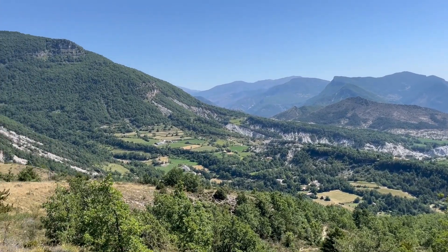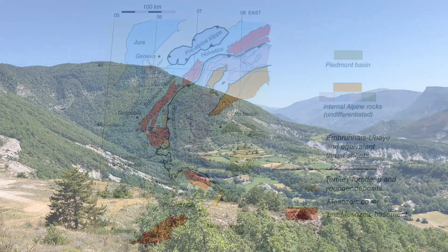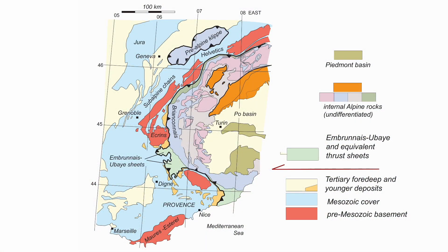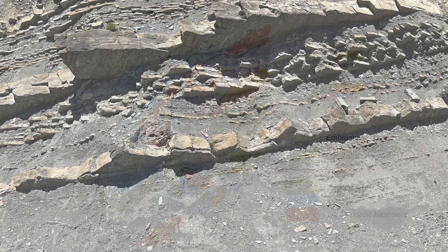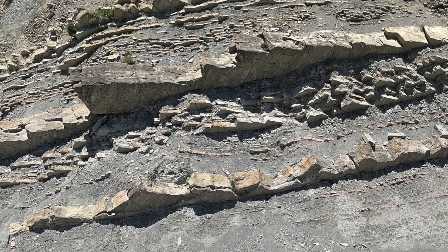So, where are we? We're in the Western Alps and the Annot sandstone is preserved in a series of pretty large outcrop patches. They include classic turbidites.